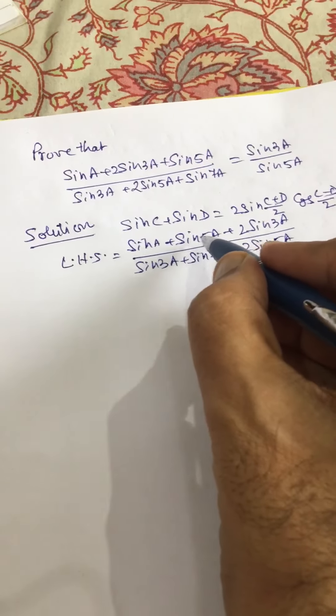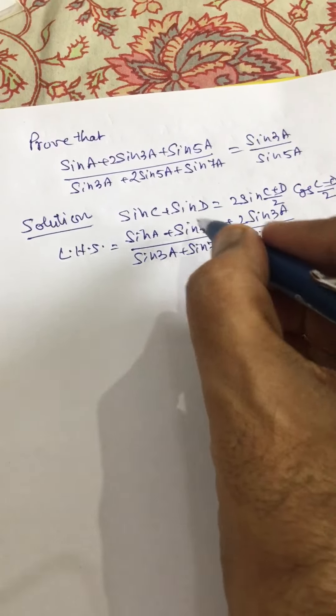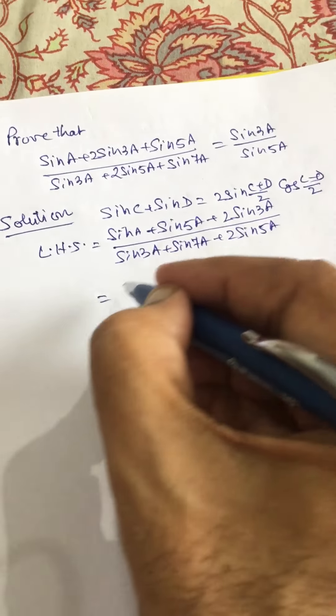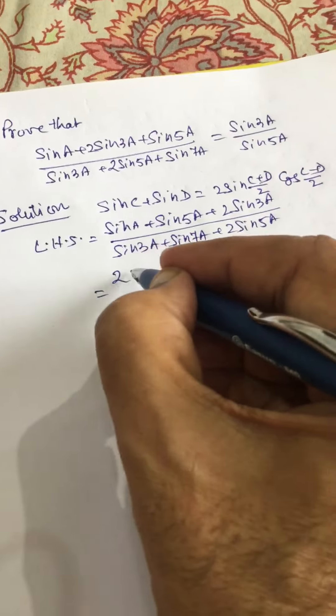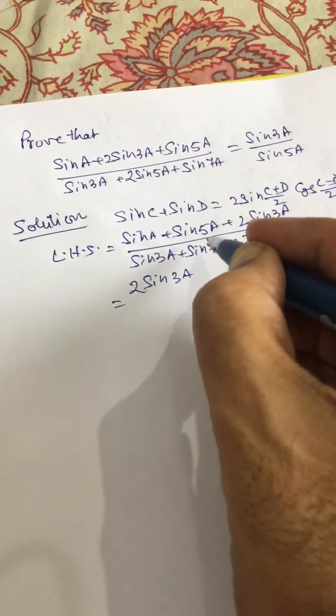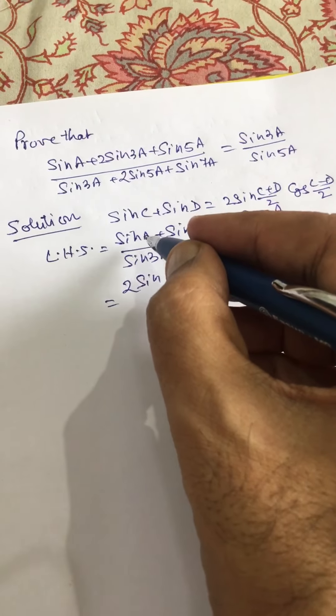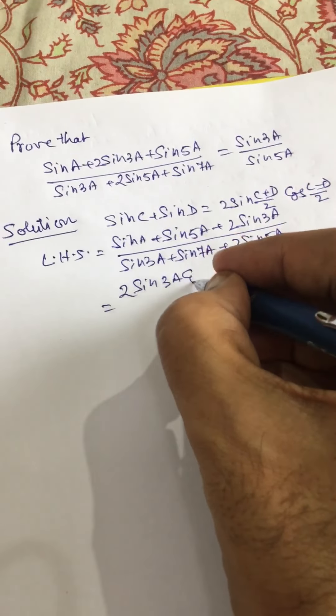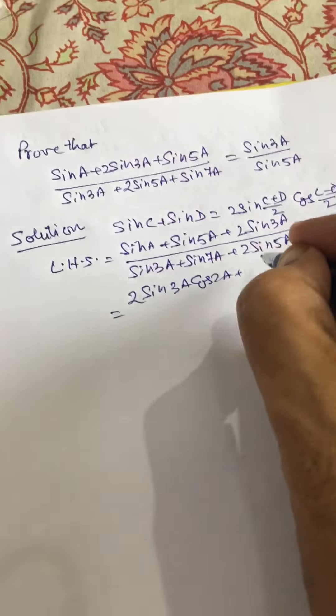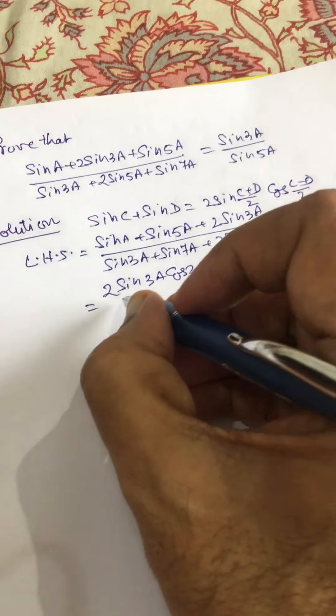Applying this formula to these two terms in the numerator and denominator, we get 2 sin 3A, and this becomes 5A minus A, which is 4A, that is 2A, plus 2 sin 3A, divided by...